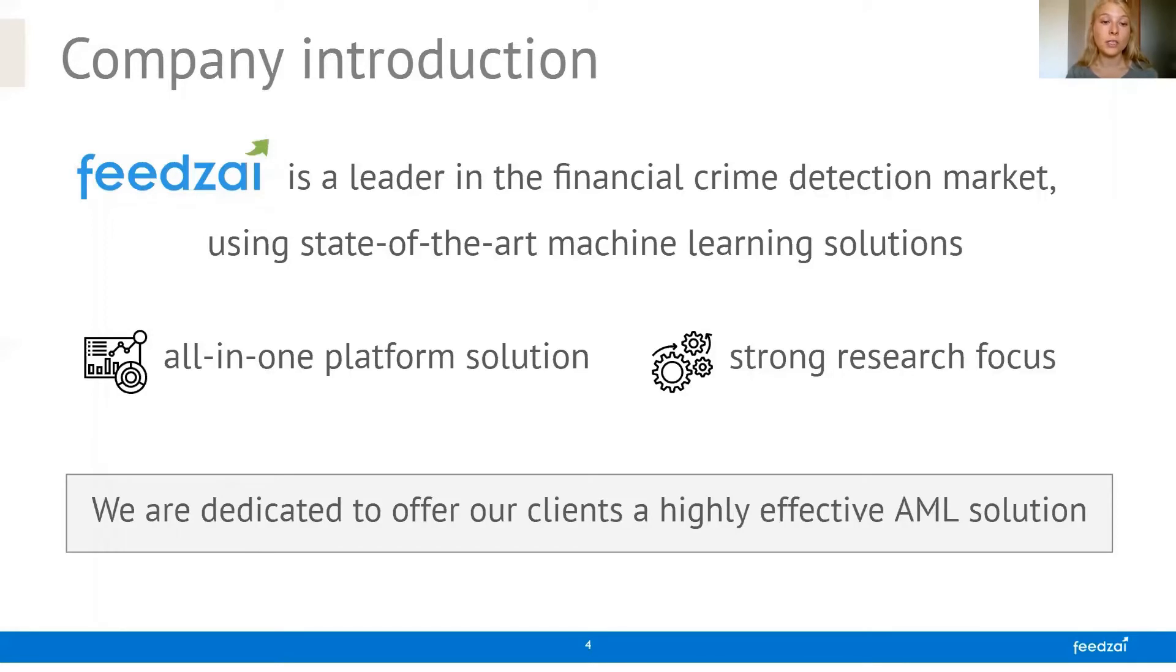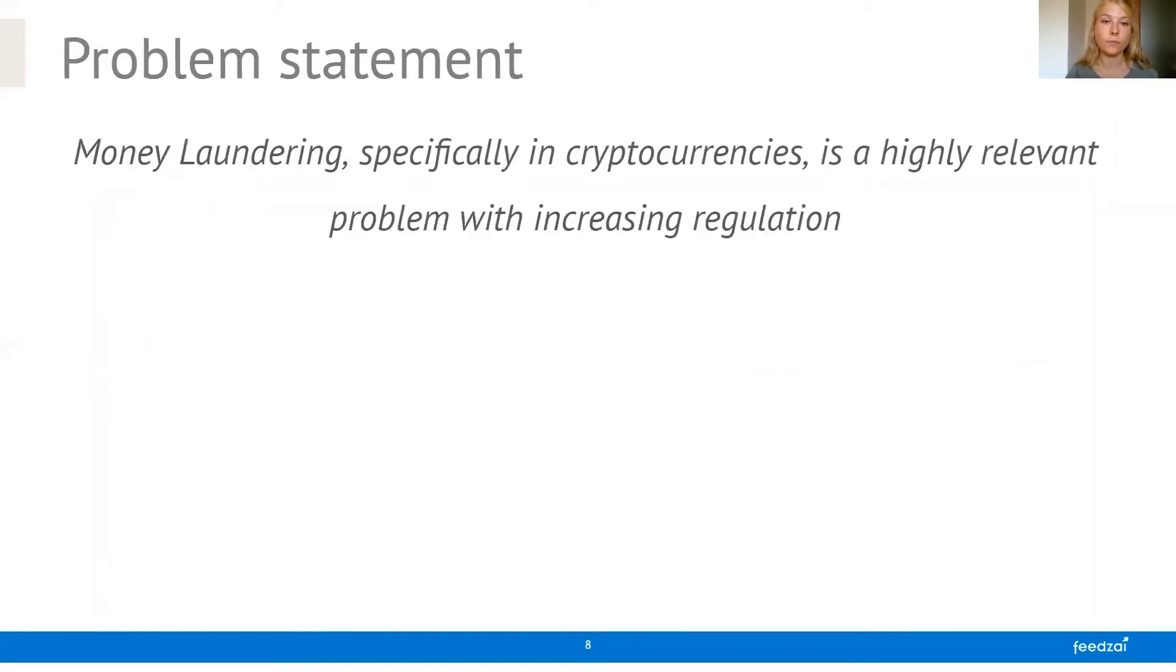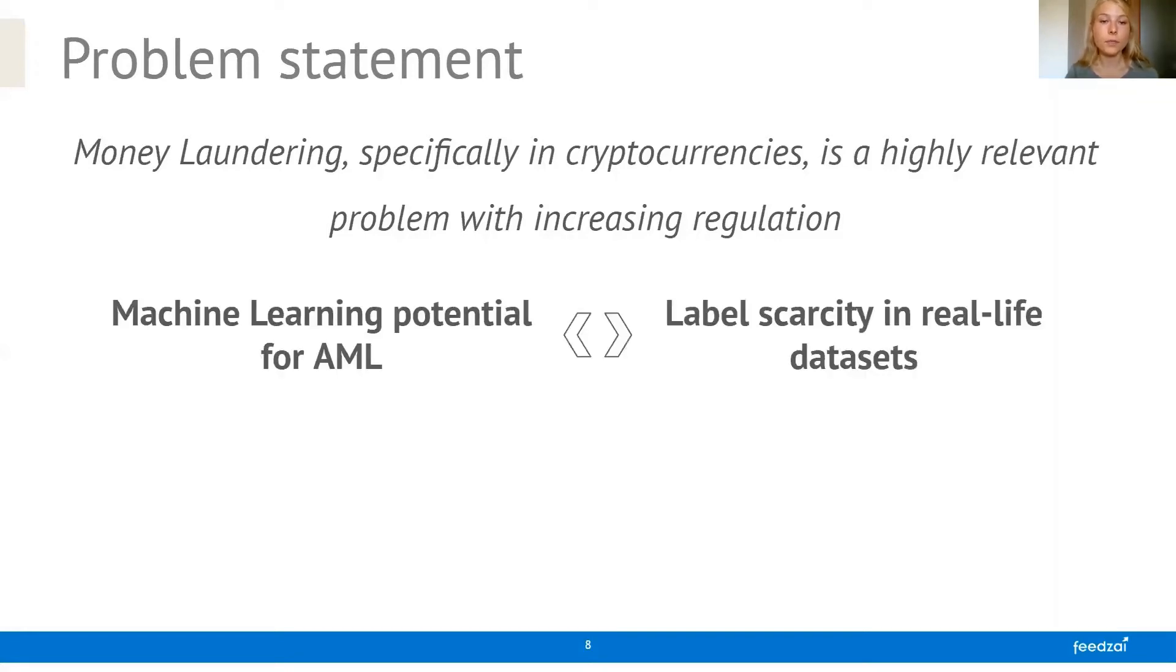We're also highly dedicated to offer our clients an effective AML solution. Money laundering in general is a highly relevant problem for economies all around the world and regulations are increasingly tightening. Especially cryptocurrencies in recent years have developed as a haven for illegal activity in this specific context. Machine learning has a very strong potential for AML because it's able to find very complex patterns in data but it would also be able to overcome the simplicity of the regulatory rule sets.